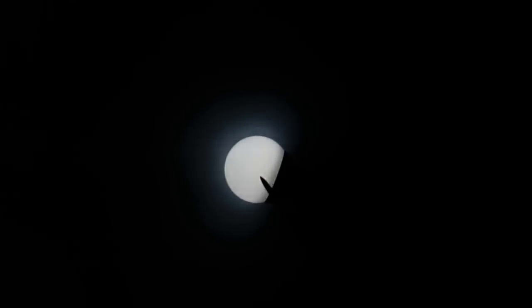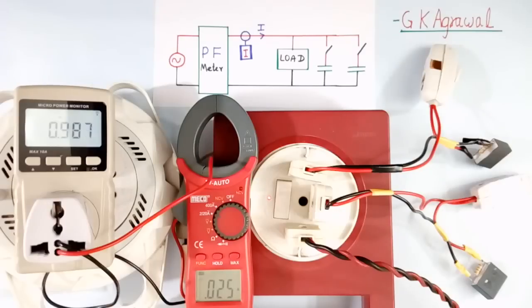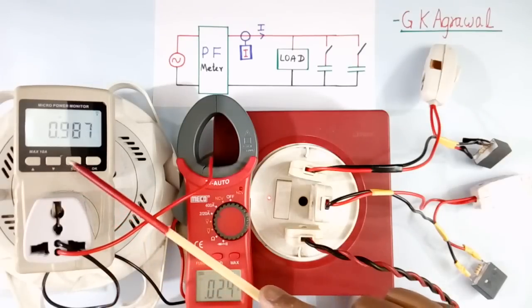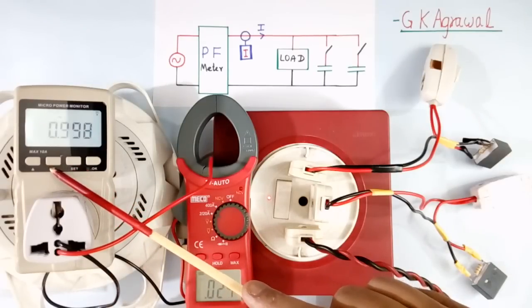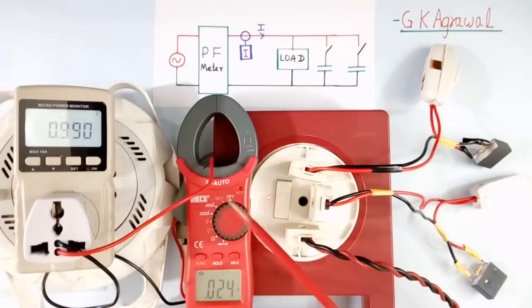LED bulb is on now. Power factor of LED bulb is about 0.99. And current is 0.024 ampere. So it has very good power factor.